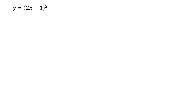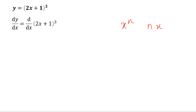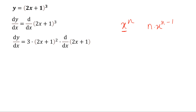y equals to 2x plus 1 raised to the power of 3. Let's differentiate it with respect to x on both sides. So d by dx of y equals to d by dx of 2x plus 1 the whole cube. We are going to use this rule: if the function is in this form, the derivative is n times x to the power of n minus 1. Here x is 2x plus 1, so that would be 3 times 2x plus 1 squared. We keep the inside function as it is, times d by dx of the inside function, which is 2x plus 1.